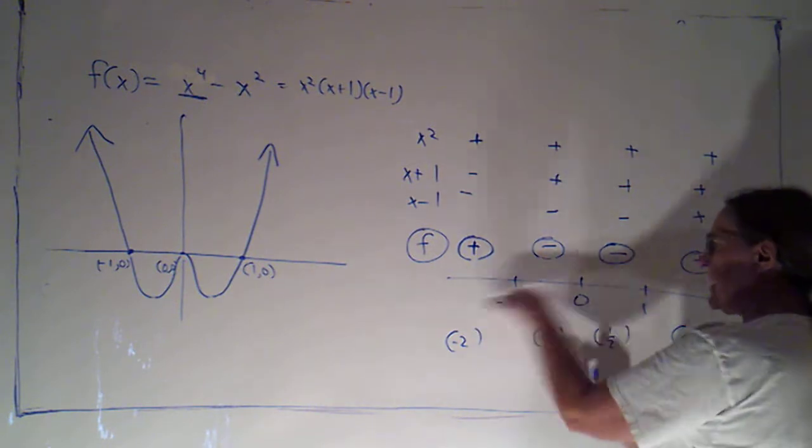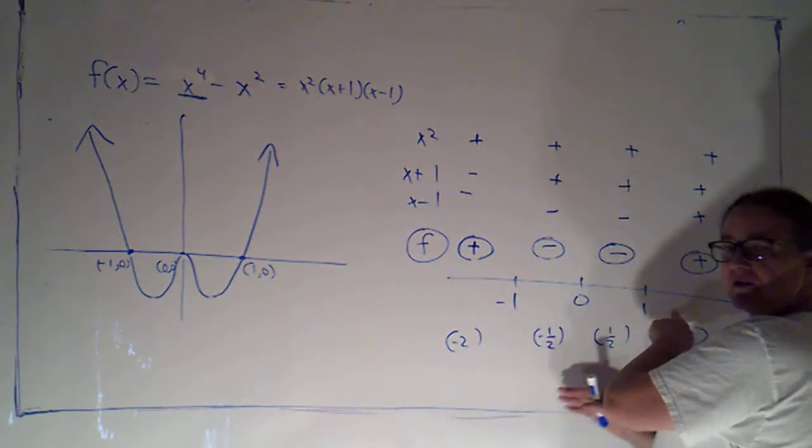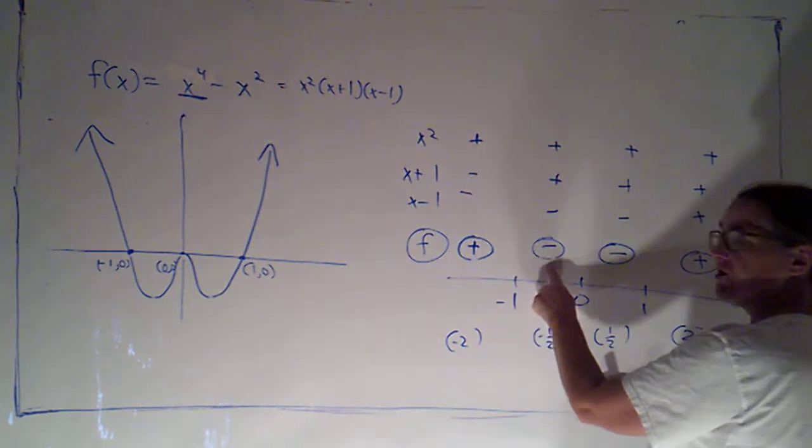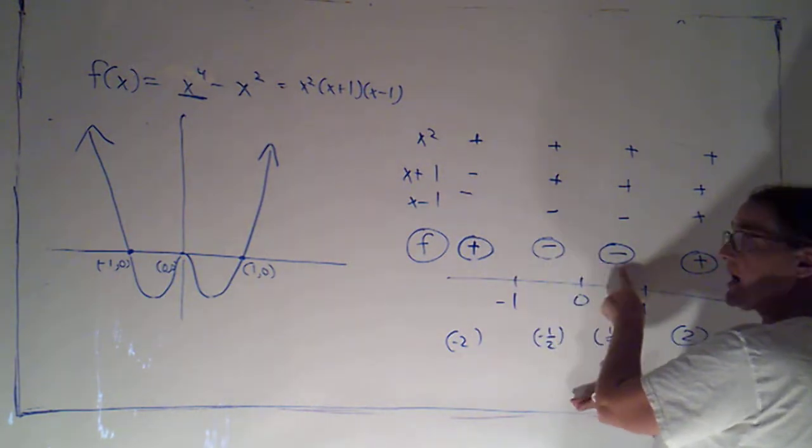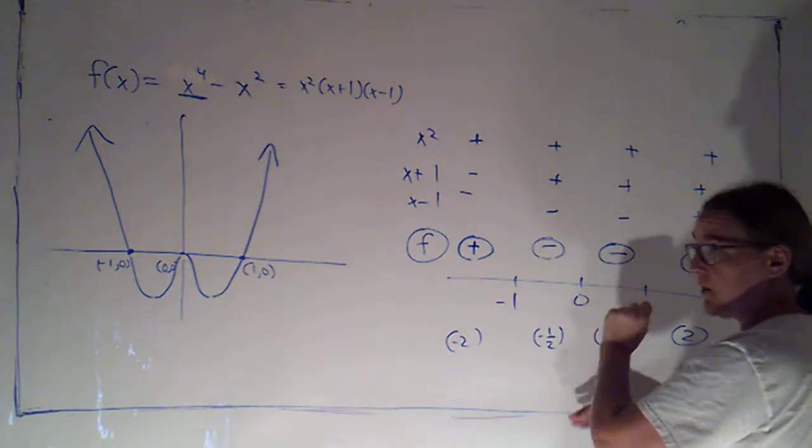Now, if I look at this number line where I marked off my zeros, I see that sometimes the function changes signs and sometimes it doesn't at a zero.